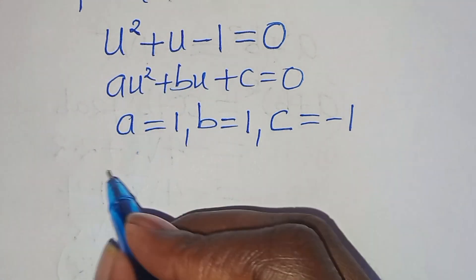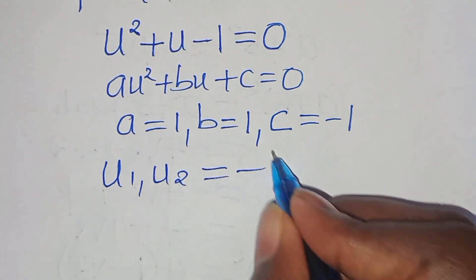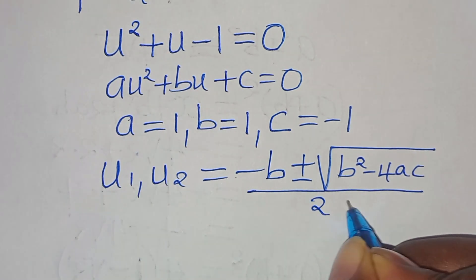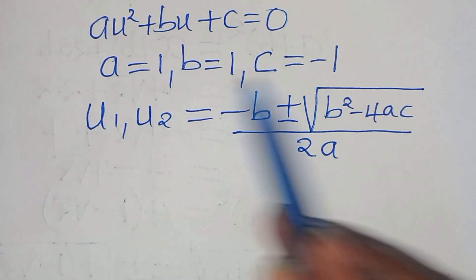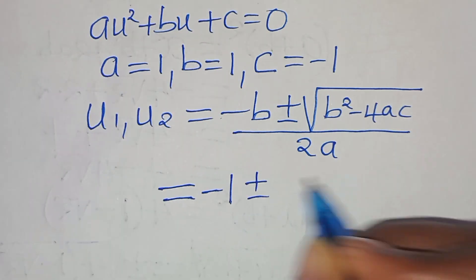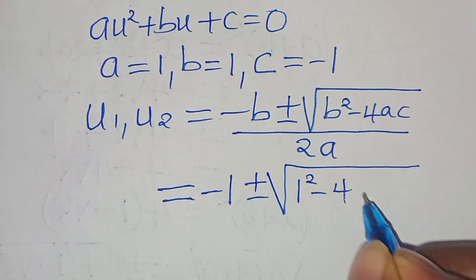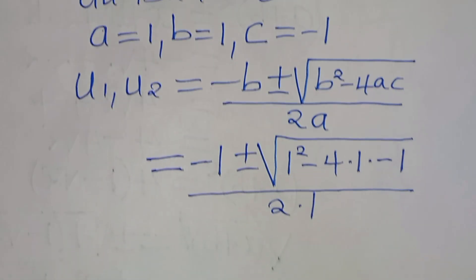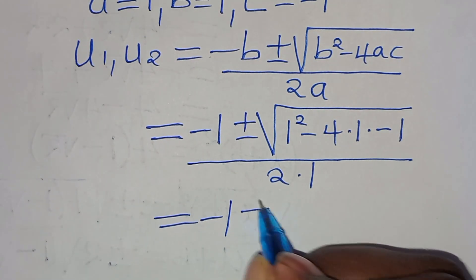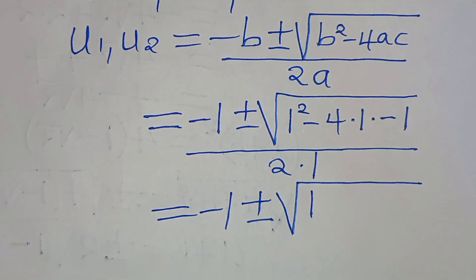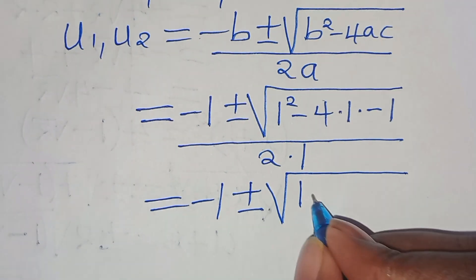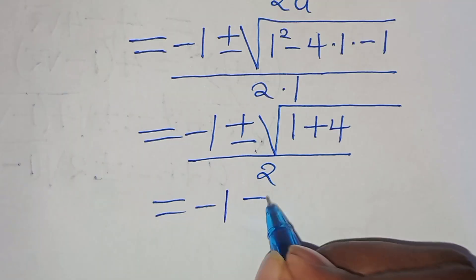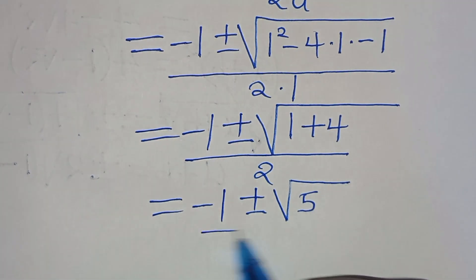To solve for u, we apply the quadratic formula: minus b plus or minus the square root of b squared minus 4ac, all divided by 2a. Substituting: minus 1 plus or minus the square root of 1 squared minus 4 times 1 times minus 1, all divided by 2 times 1. This gives minus 1 plus or minus the square root of 1 plus 4, which is 5, all divided by 2.